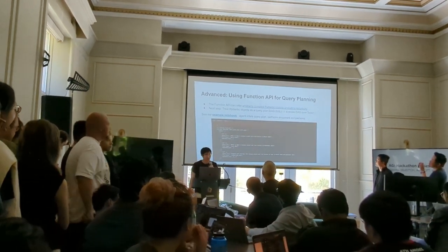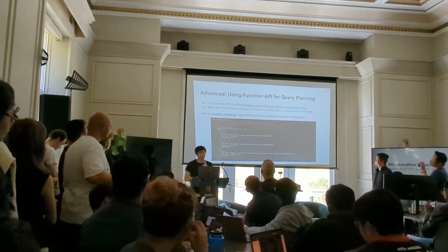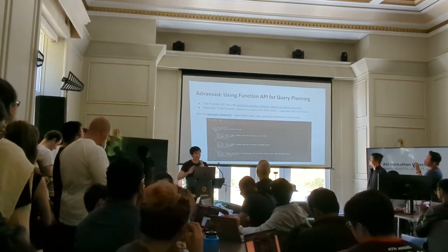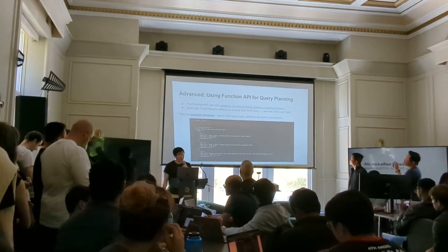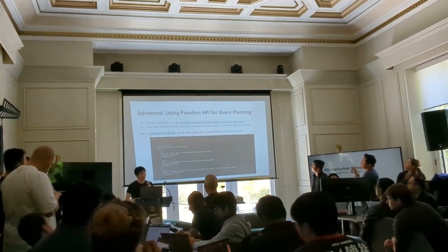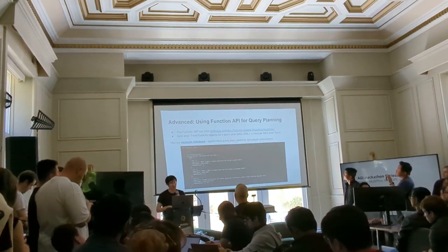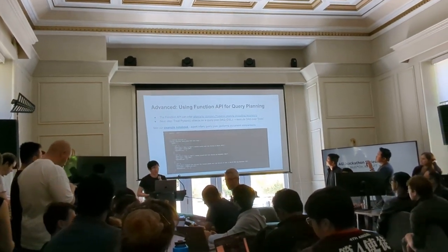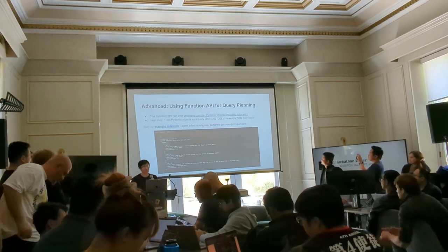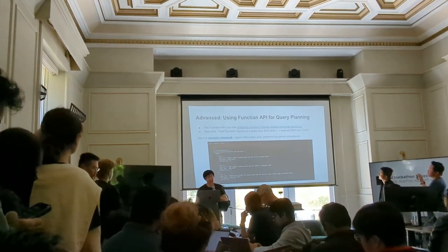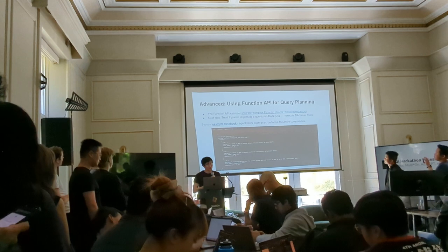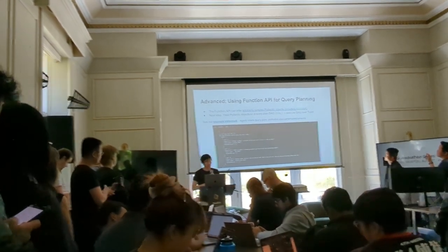The last bit is more exploratory: the Function API can infer structured outputs — not just strings, but arbitrarily complex Pydantic objects. If you follow Jason on Twitter, he's been very active about this. Basically you can treat these Pydantic objects not just as structured data extractors, but as a query plan or a DAG over your data. If you execute this DAG over a set of sub-tools, you can get query-refining agents with the Function API — the API infers your query plan from your Pydantic objects, and then you execute that query plan over your data. We're figuring out best practices for that, so if you try it out, I'd be very interested in seeing your results.